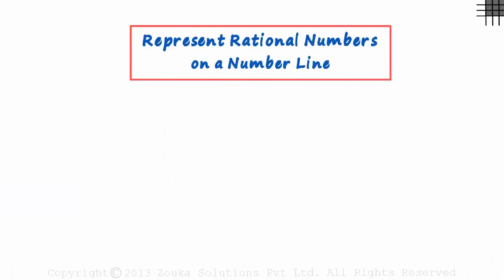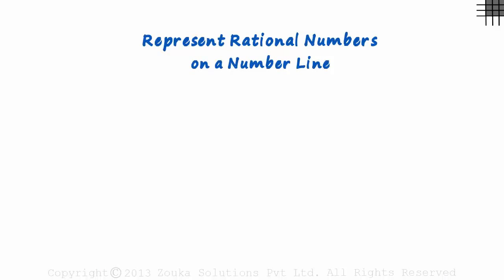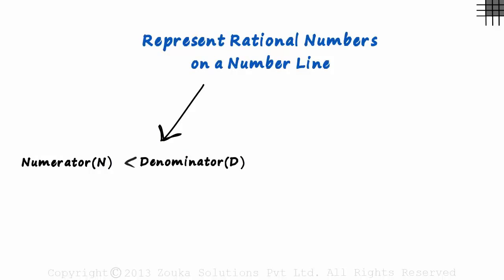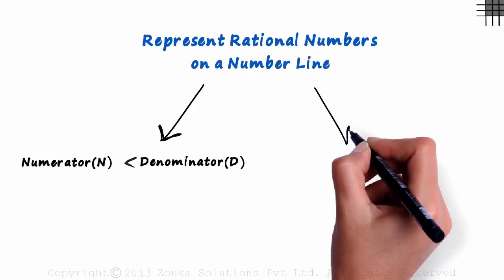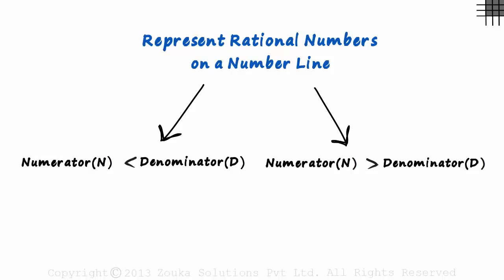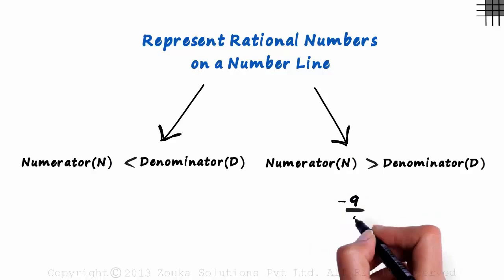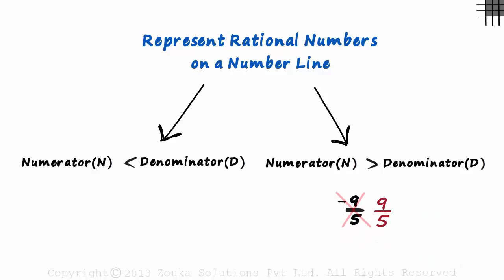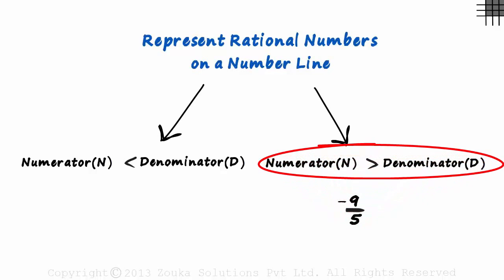Now we can move on to the representation of rational numbers on a number line. To simplify things, we can classify the examples into two types: ones in which the numerator is less than the denominator, and the other in which the numerator is greater than the denominator. Note that we use only the numerical value to compare the numerator and the denominator. For example, if we are plotting minus 9 by 5, we compare 9 and 5 and not minus 9 and 5. So minus 9 by 5 will come in the numerator greater than denominator category.